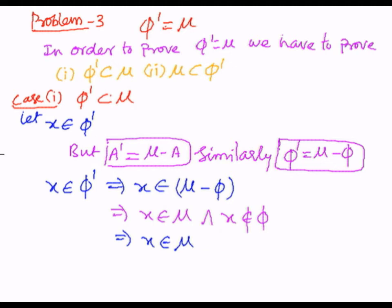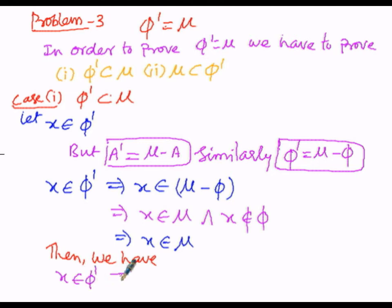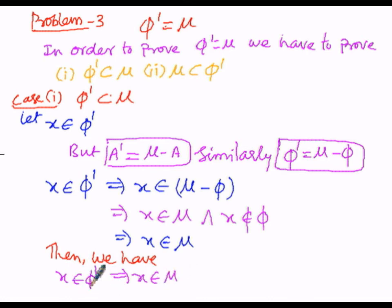The next logical step: LHS is x belongs to φ dash, which implies x belongs to μ. So x belongs to the complement of the empty set, then x is also present in the universal set. Since the elements of the LHS are also elements of the RHS, therefore LHS will be the subset of RHS. In this manner we got φ dash is a subset of μ, proving Case 1. Let us consider this as Equation 1.